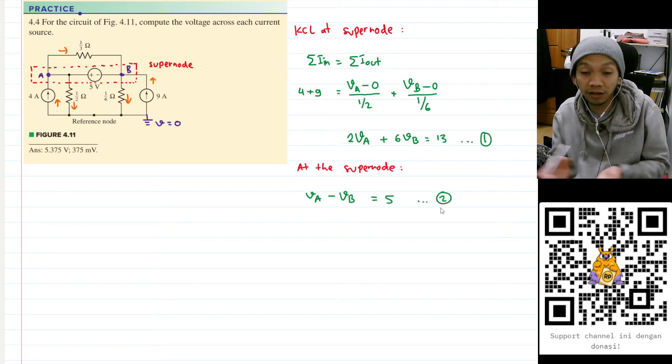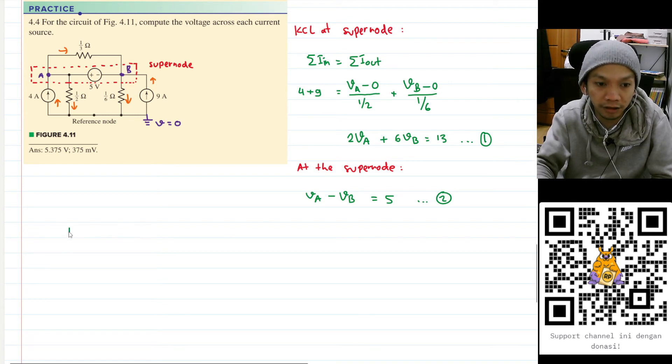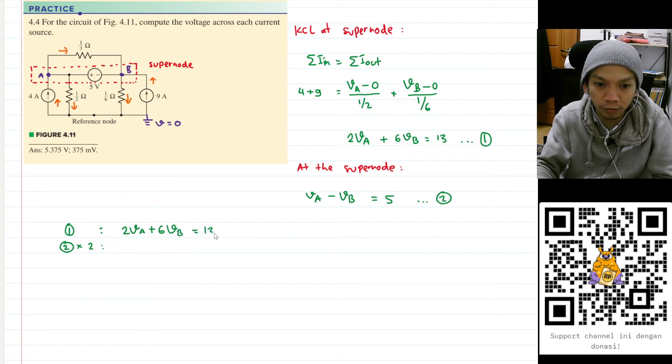So I will have two equations and two variables, so we should be able to solve them by using elimination. So I'll have equation one, I will just leave it as is. And for equation two, I think I want to multiply it by two, right. I want to cancel the VA. So you'll have two VA plus six VB is equal to 13, and then two VA minus two VB will equal to 10. So let's subtract this equation.